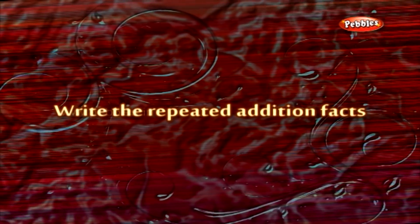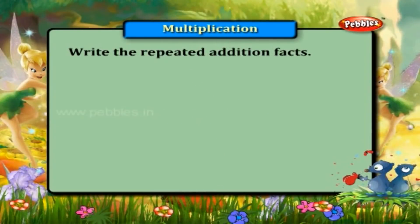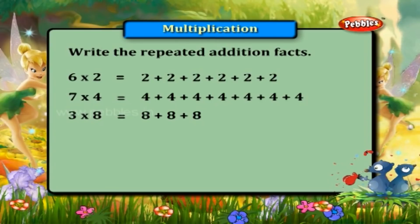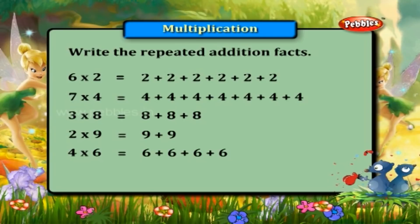Write the repeated addition facts. Six into two is equal to two plus two plus two plus two plus two plus two. Seven into four is equal to four plus four plus four plus four plus four plus four plus four. Three into eight is equal to eight plus eight plus eight. Two into nine is equal to nine plus nine. Four into six is equal to six plus six plus six plus six. Five into three is equal to three plus three plus three plus three plus three.